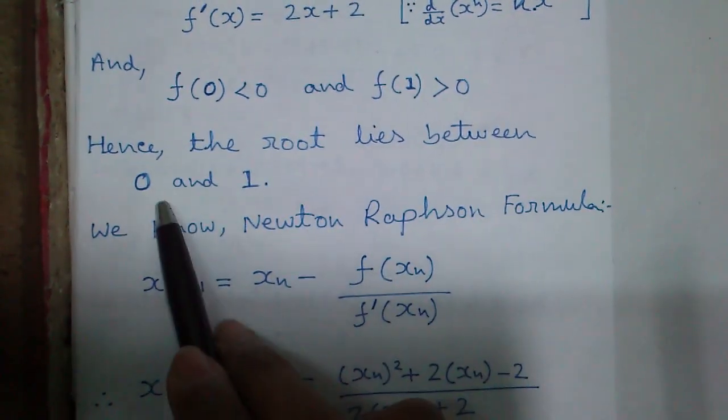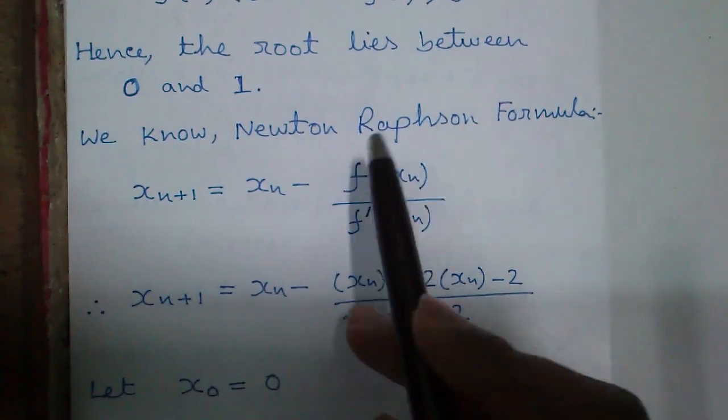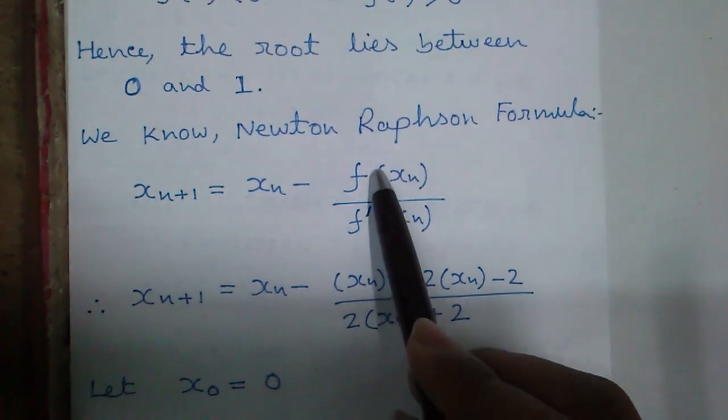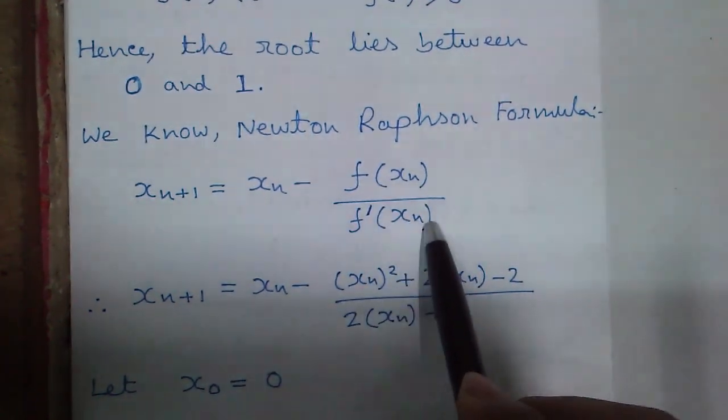We know the Newton-Raphson formula: x_{n+1} equals x_n minus f(x_n) divided by f'(x_n).